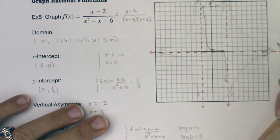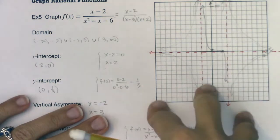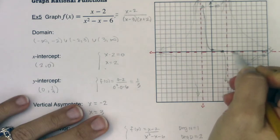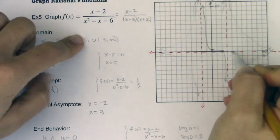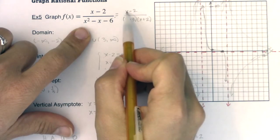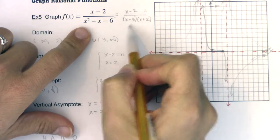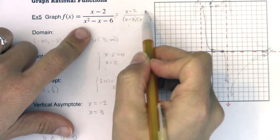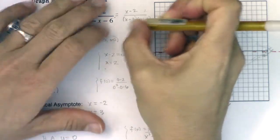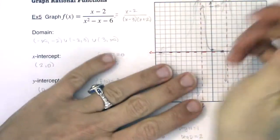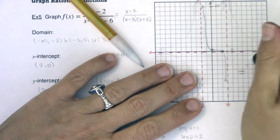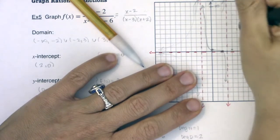For the right section, I'll pick a test point. Let's try x=4: (4-2)/((4-3)(4+2)) = 2/(1×6) = 2/6 = 1/3. So the point (4, 1/3) is above the x-axis. That tells me the right portion of the graph is on the upper half, so I can sketch it coming down toward the horizontal asymptote from above.